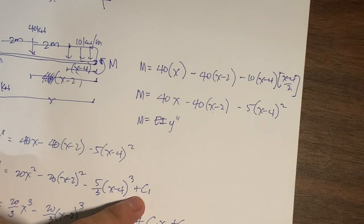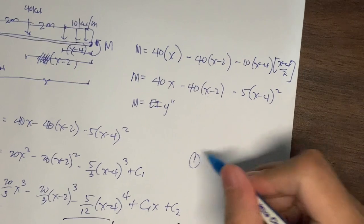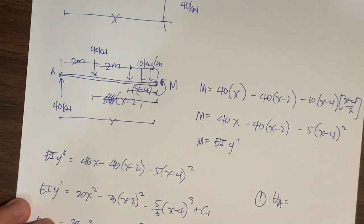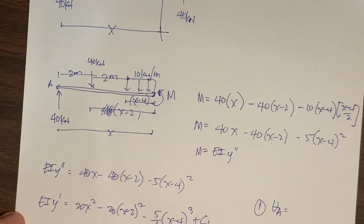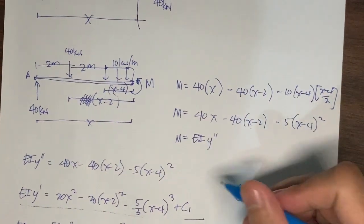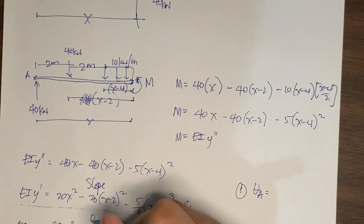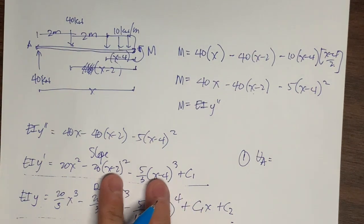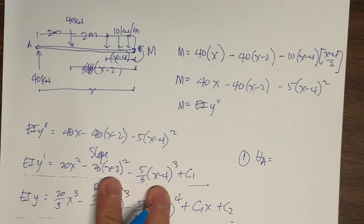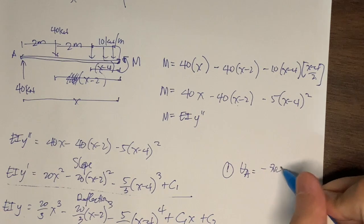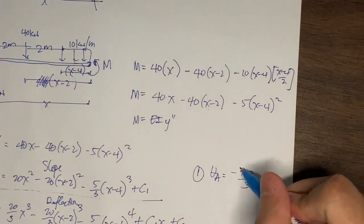Now we know C1 equals negative 700/3 and C2 equals 0. For problem number one, we need the slope at A. Since point A is at x equals 0, substituting into the slope equation: all bracket terms cancel, leaving EI·θA = C1 = negative 700/3. Therefore, the slope at A is negative 700 over 3·EI.